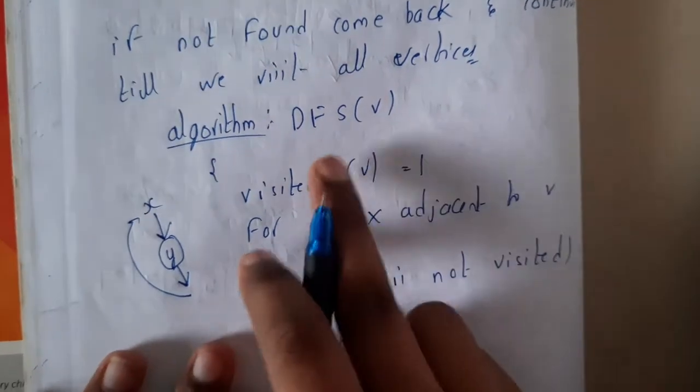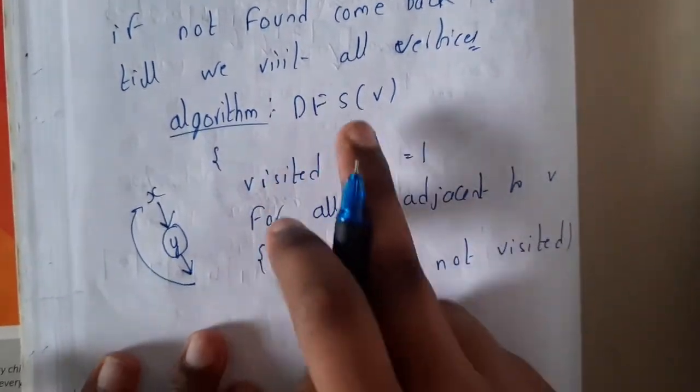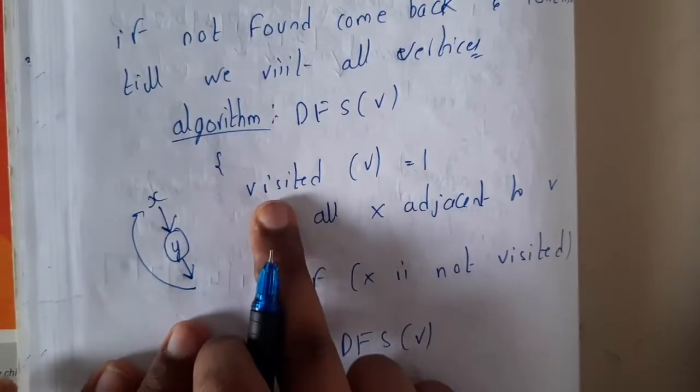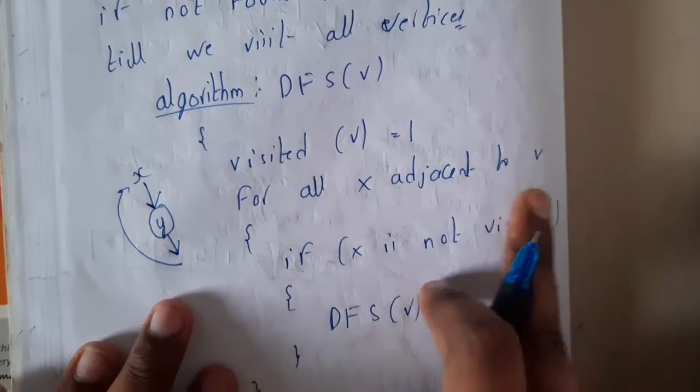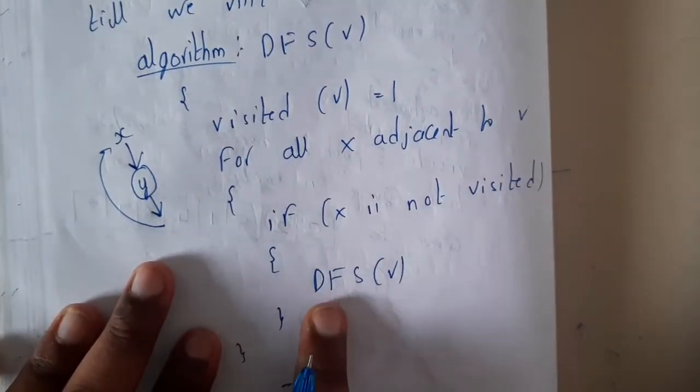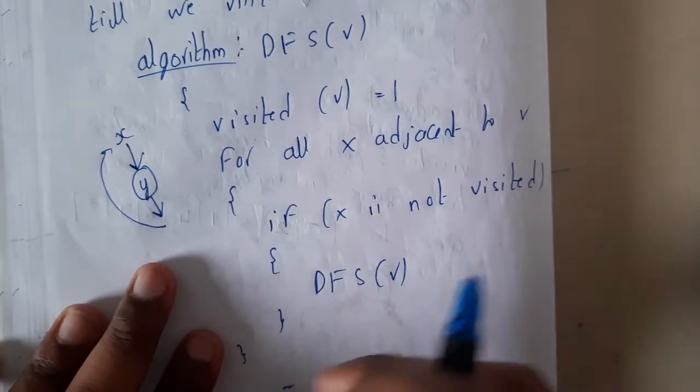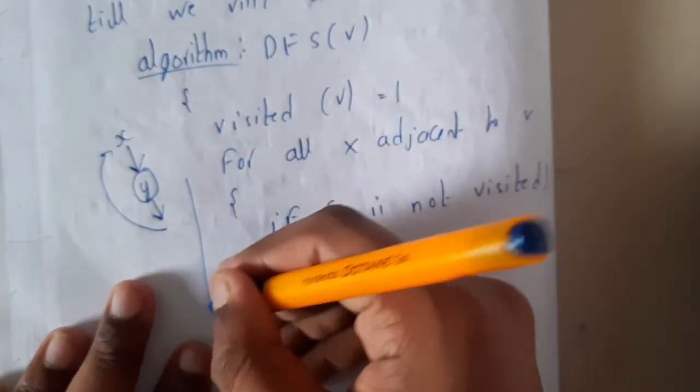Depth First Search of vertex v: initially visited[v] equals 1. For all x adjacent to v, if x is not visited, do Depth First Search from there. So you will be going recursively, like you'll be going in terms of depth, step by step.